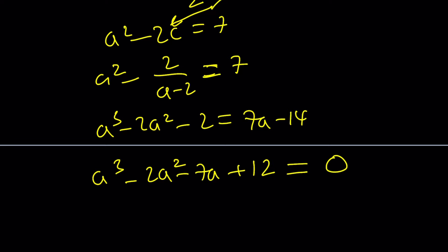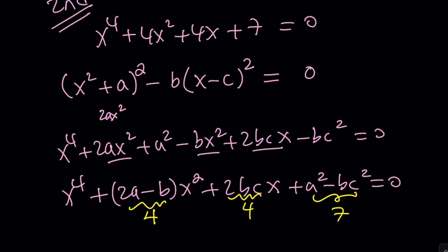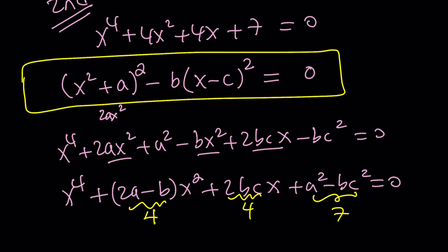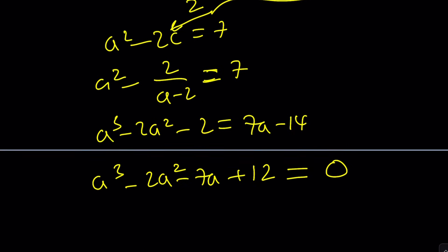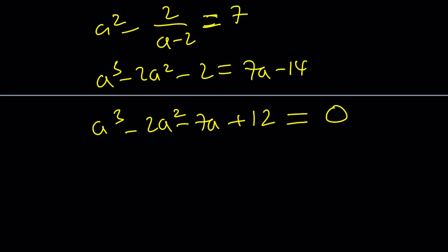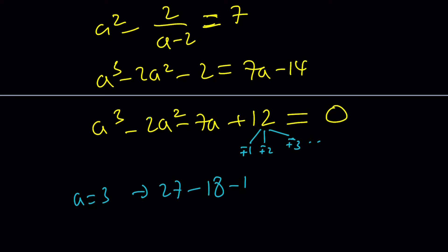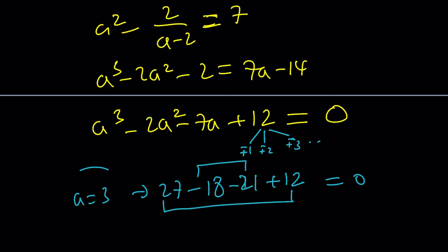Now let's go back to our equation. Once we find a, b, c, we'll have our expression in factored form. We can use the rational root theorem since I expect it to be an integer — test the factors of 12: plus or minus 1, plus or minus 2, plus or minus 3, and so on. Starting with a equals 3: 27 minus 18 minus 21 plus 12 equals 0. So a equals 3 works.